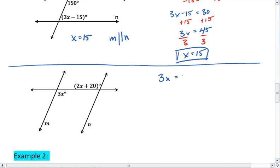meaning that 3x equals 2x plus 20. To solve for this, we first want to subtract 2x from both sides. We are left with x equals 20.